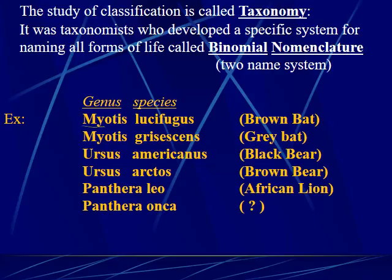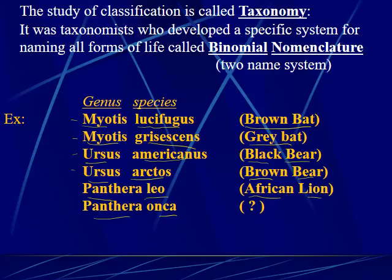For instance, Myotis lucenificus is the brown bat and Myotis chrysanis is the gray bat — notice they share the same genus name. Ursus americanus is the American black bear, and Ursus arctos is the brown bear. Panthera leo is the African lion, and Panthera anca — following the pattern, since Panthera is like 'panther,' a type of large cat — this would be the American jaguar. Bats tend to be Myotis, bears tend to be Ursus, though there are always exceptions.